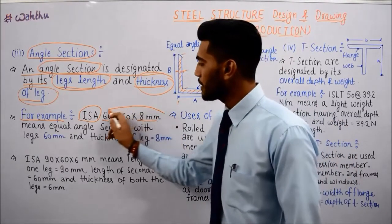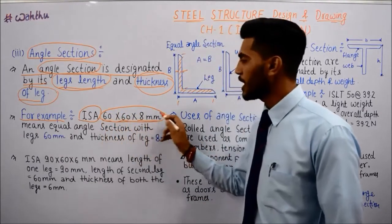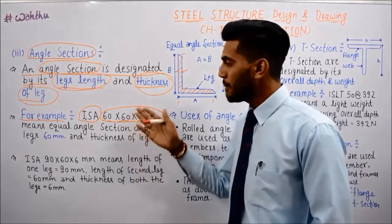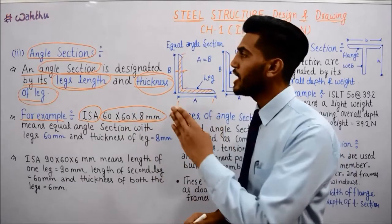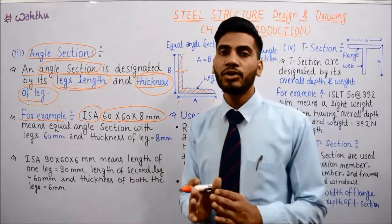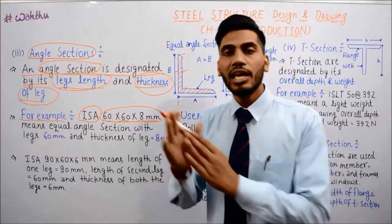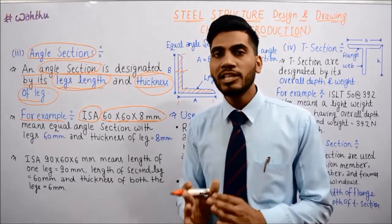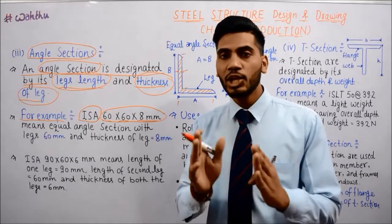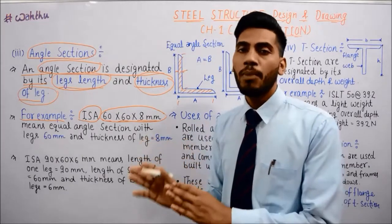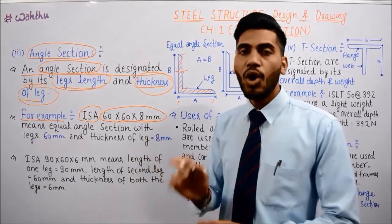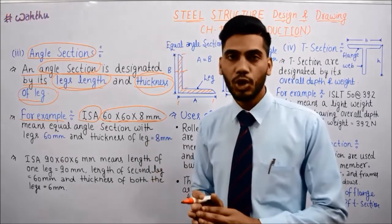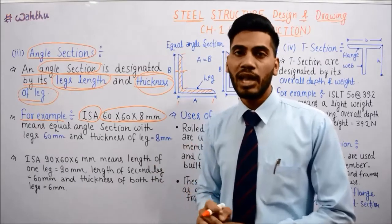We need to understand this notation. Angles are divided into two parts: one is equal angle and the other is unequal angle. In an equal angle, both leg lengths are equal. In an unequal angle, one leg is longer and the other is shorter — they have different lengths.